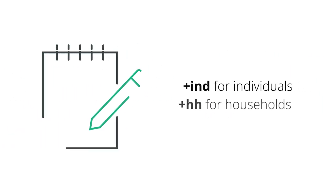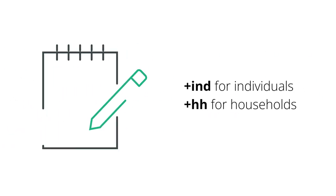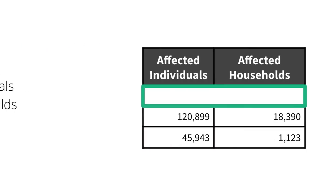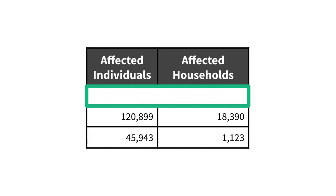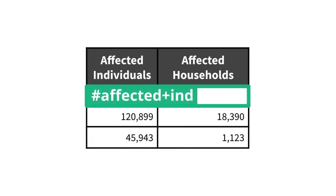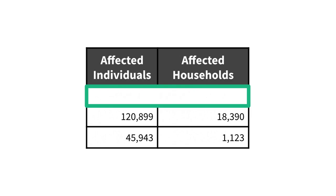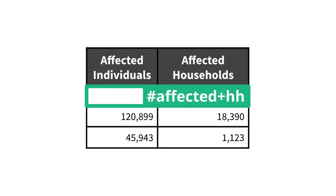To distinguish between individuals and households, we use the attributes +IND and +HH. For example, we would use #affected+IND for individuals affected by the crisis, and #affected+HH for the number of households affected.